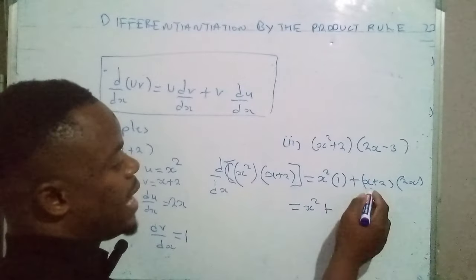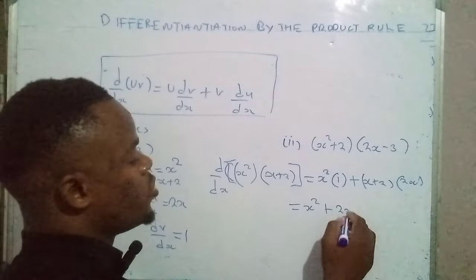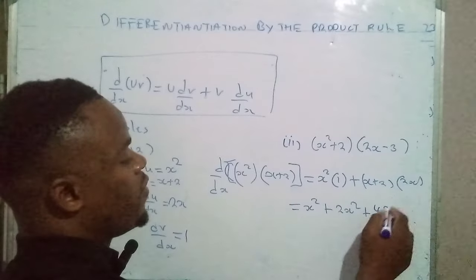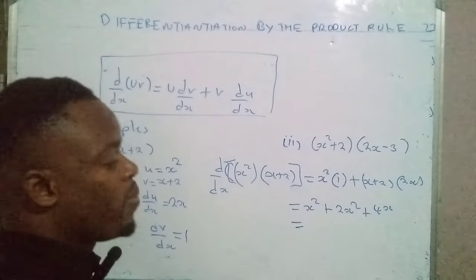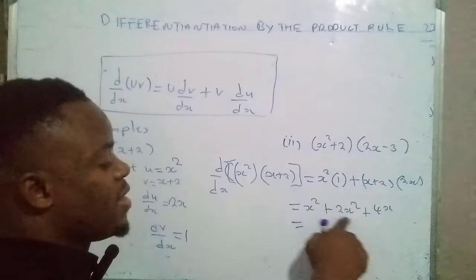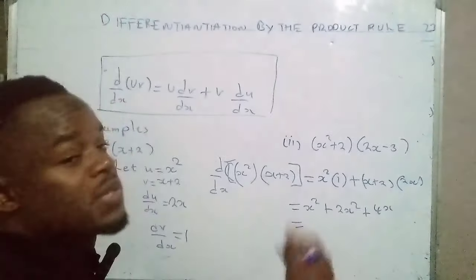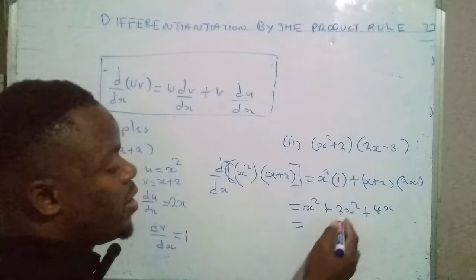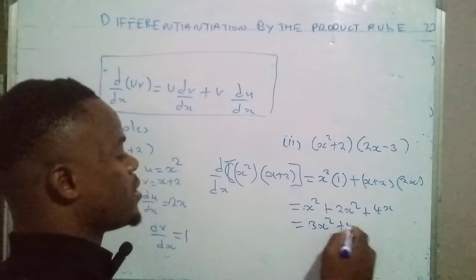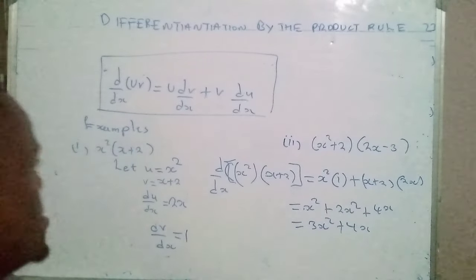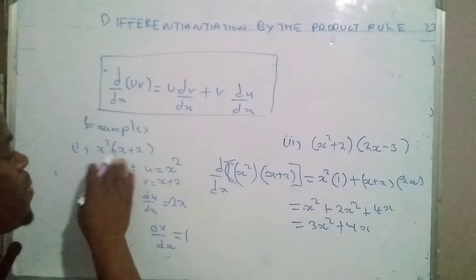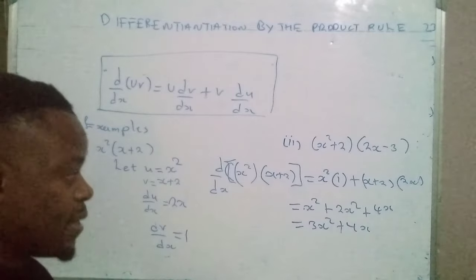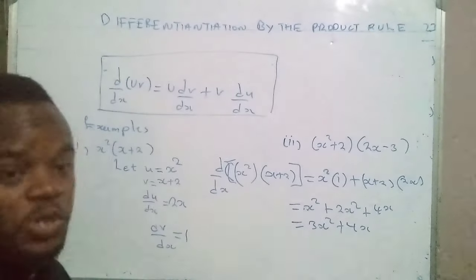x squared, plus x times 2x gives 2x squared, then plus 2 times 2x gives 4x. Checking properly, x squared and 2x squared are like terms — they have the same power — so we can add them: 1 plus 2 gives 3x squared plus 4x. That is the derivative of this product of two functions.